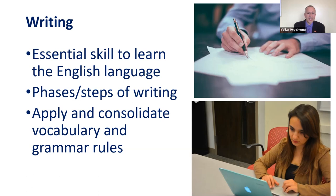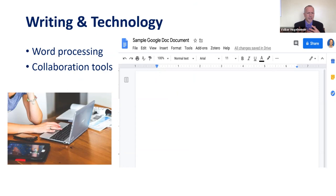Writing is an essential skill in English. There are different phases and steps of writing, and you can apply and consolidate vocabulary and grammar rules. The aspects we talked about before — we could now integrate words like 'upcycle' or grammar points into our writing. I'd like to briefly talk about writing and technology: since the inception of word processing, we've moved from pen and paper to typing, which gives us affordances like copy, paste, revise, and edit.